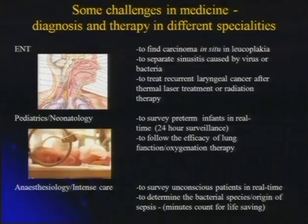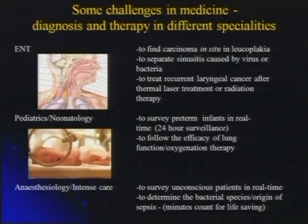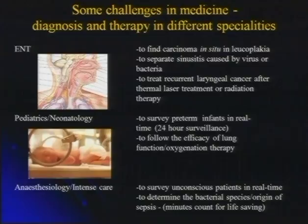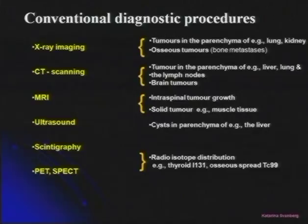We will also discuss neonatology and pediatrics. We have developed a technique we believe could be transferred to the pediatric ward to develop a surveillance system for small prematurely born kids. Their problem is immature lung function — they cannot oxygenate organs sufficiently — and the brain is the most important organ to protect.